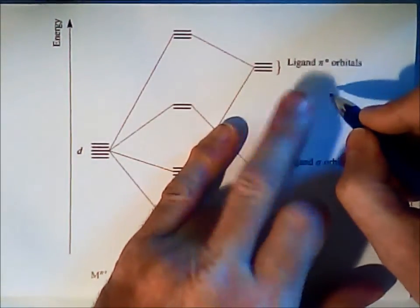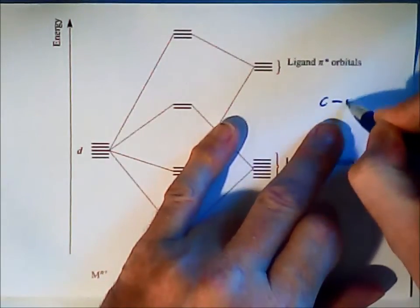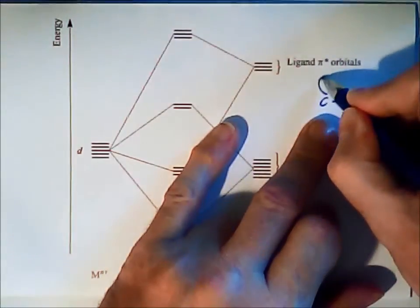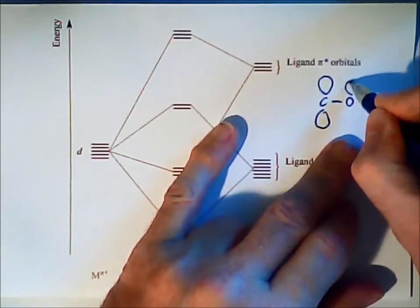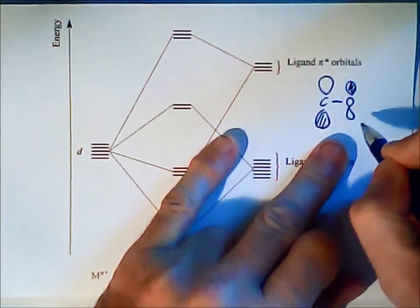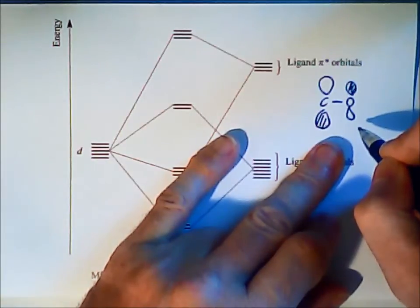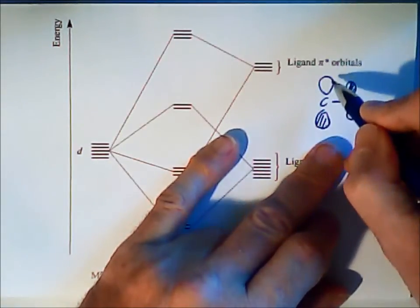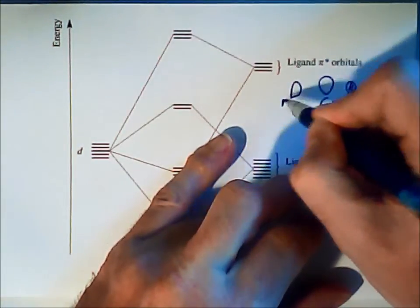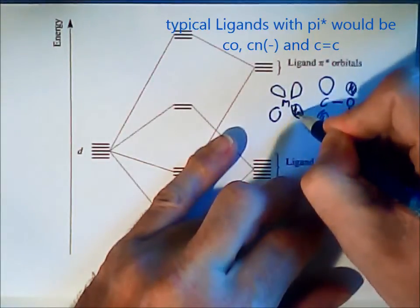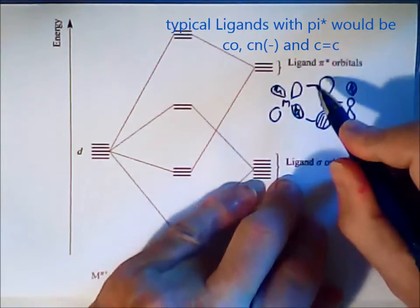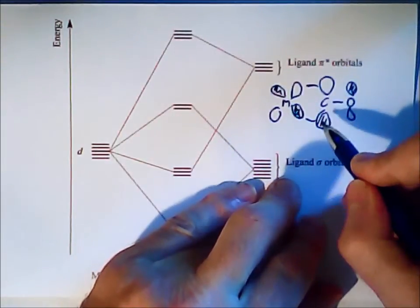Carbon monoxide has an unfilled empty π* level. It would look like this. And we see that this symmetry again will fit with the metal d symmetry, d orbital, similar to the p case before.